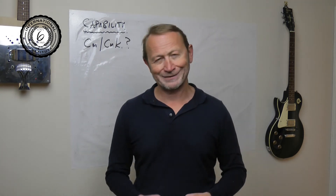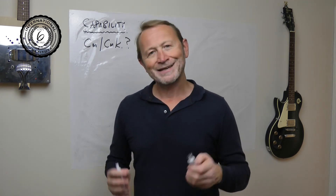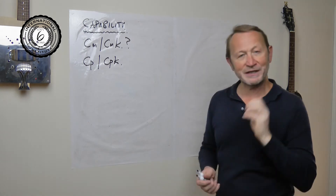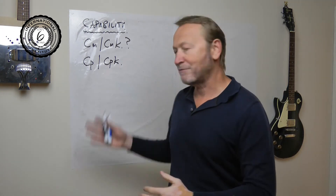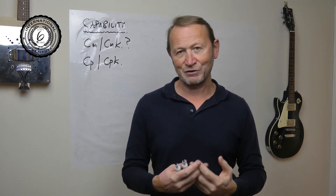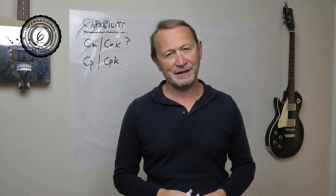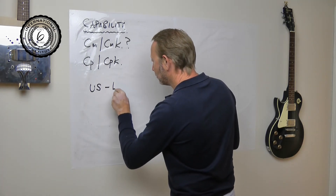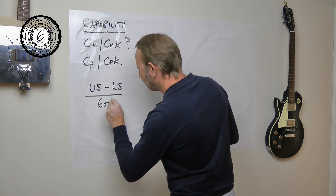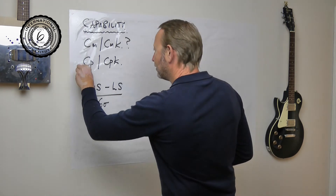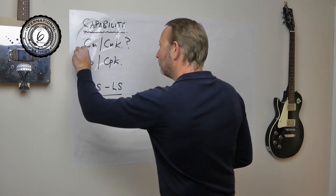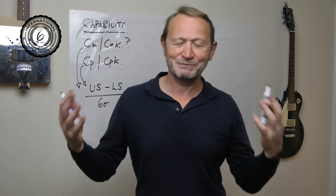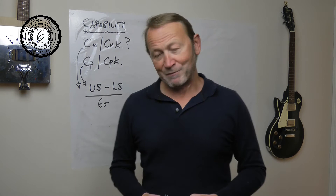So let's go back to the question: CM and CMK — what is it? Well, it's a special version of CP and CPK. In that sense, the mathematics presented is identical. The idea is that you take the upper spec minus the lower specification, all divided by six standard deviations — that is the CP calculation, but it's also the CM calculation. So what's the difference? Why do we have CP versus CM?